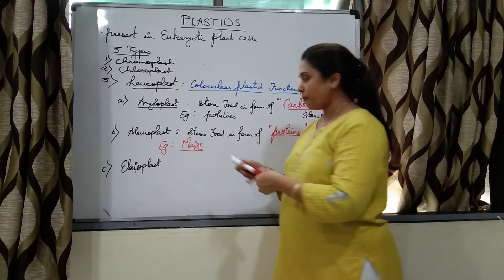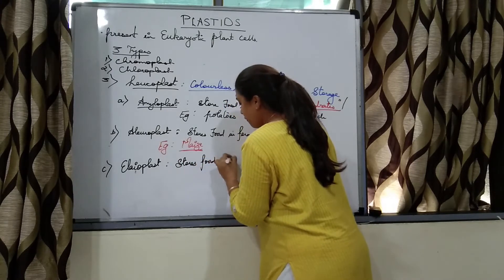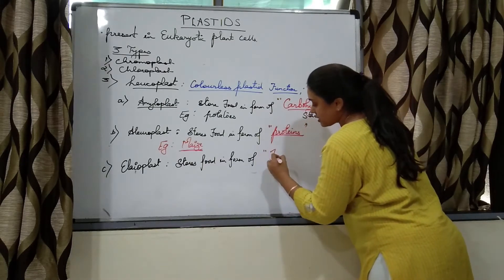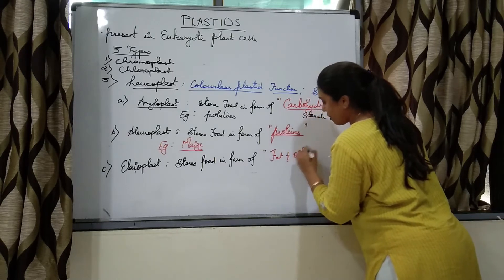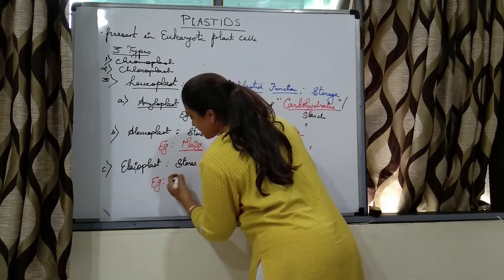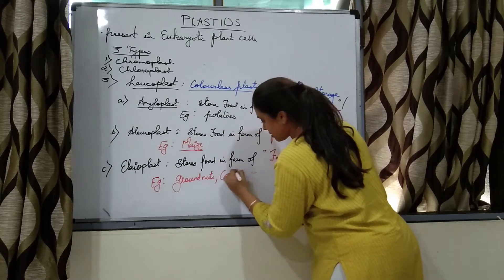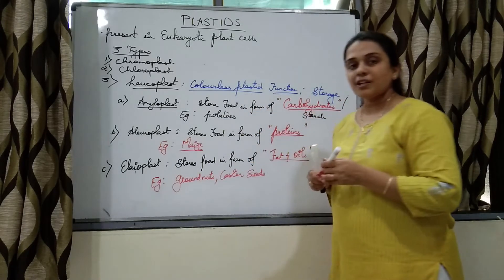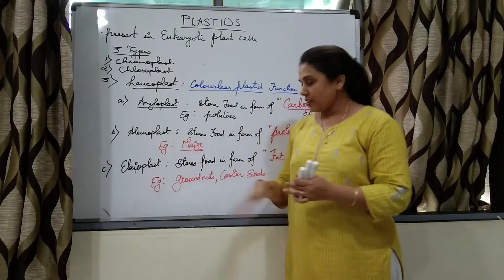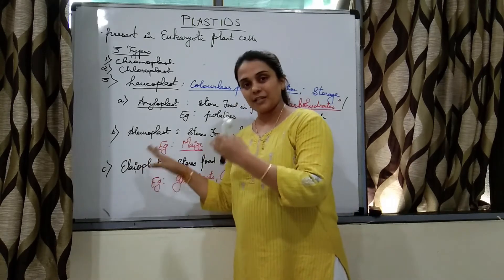The third type is elioplast. These plastids store food in the form of fats and oils. Examples include groundnuts and castor seeds. Groundnuts are rich in groundnut oil and castor seeds are rich in castor oil, so these seeds possess more amount of elioplasts.